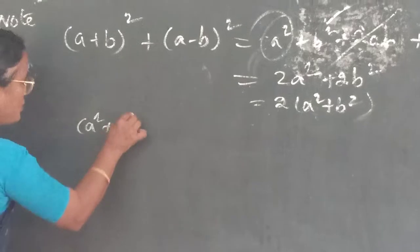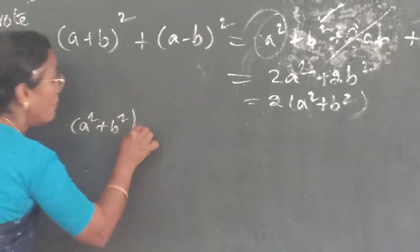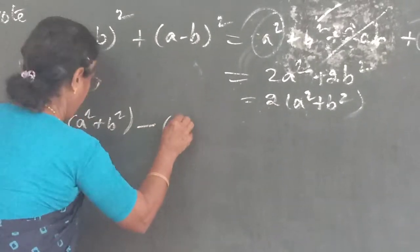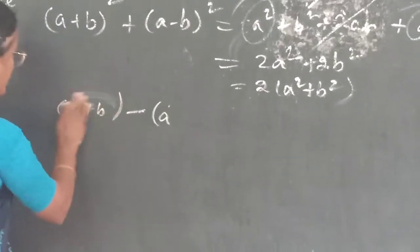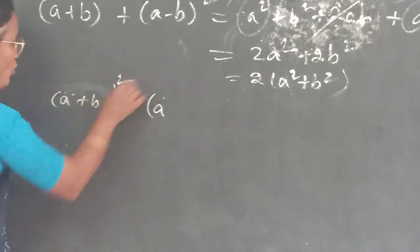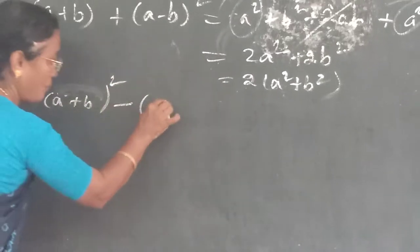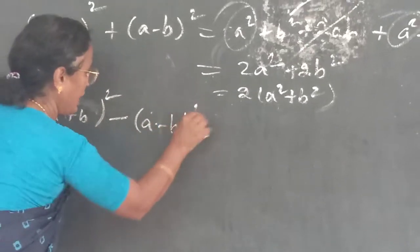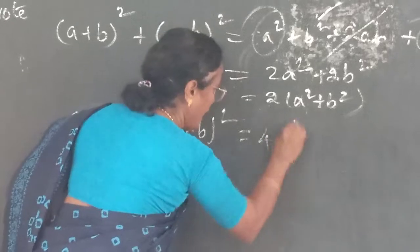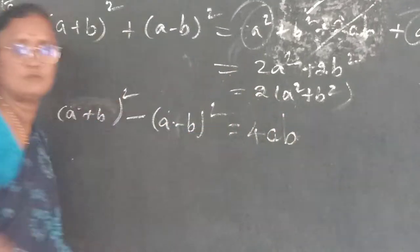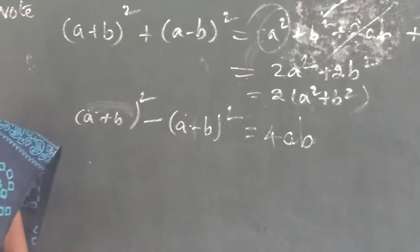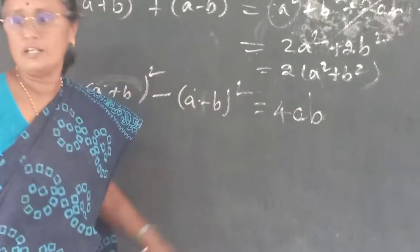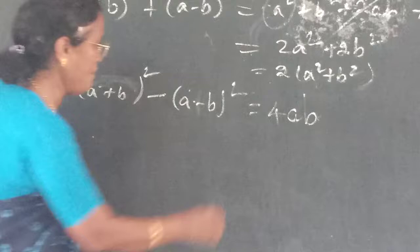(a + b) whole square minus (a - b) whole square — the answer is 4ab. Same way only.